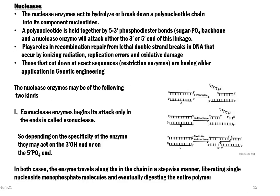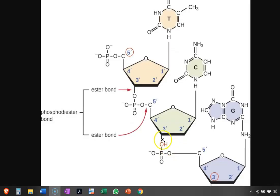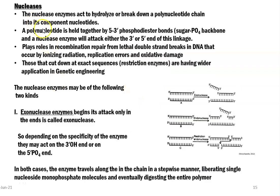The first enzyme is nucleases. As the name implies, they act on nucleic acids — that is, on the polynucleotide chain — and can hydrolyze or break the polynucleotide chain into individual nucleotides. A polynucleotide chain is held together by 5' to 3' phosphodiester bonds, which form the sugar-phosphate backbone. This image shows the phosphodiester bonds present between the 5' and 3' ends of a sugar. Nucleases can cleave this bond by attacking either the 3' end or the 5' end of the linkage.